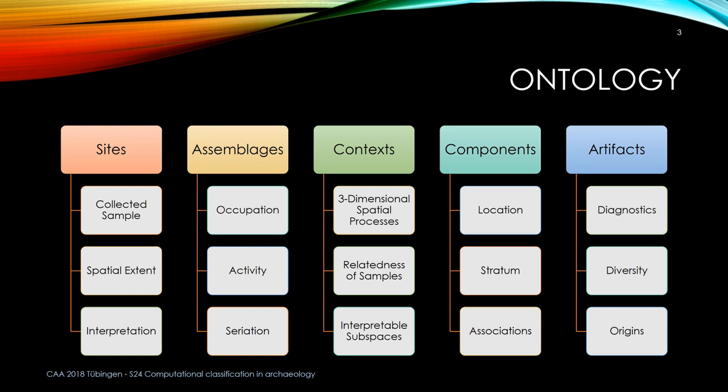My office generally uses the standard one-meter block with either natural or arbitrary spits. We're looking at relatedness of samples and the interpretable subspaces within the larger site delineation. Within that, of course, the components themselves — the excavated components — by that I mean provenance, depending on your nomenclature. And then within those, we have artifacts.